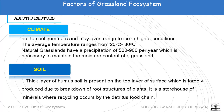Another important factor is soil. A thick layer of humus soil is present on the top layer and it is largely produced by breakdown of root structures. The soil is also very rich in minerals due to recycling by organisms present in the soil.